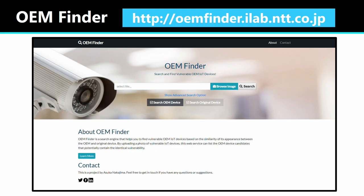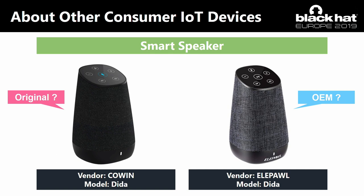The URL of OEM Finder is http://oemfinder.ilab.ntt.co.jp. Lastly, in this talk and demo I only focused on finding OEM network cameras. However, of course, the OEM production model is also applied to other types of IoT devices such as smart speakers and routers. Thus, in the future, I would like to collect images of those types of IoT devices and store them in the OEM Finder database.